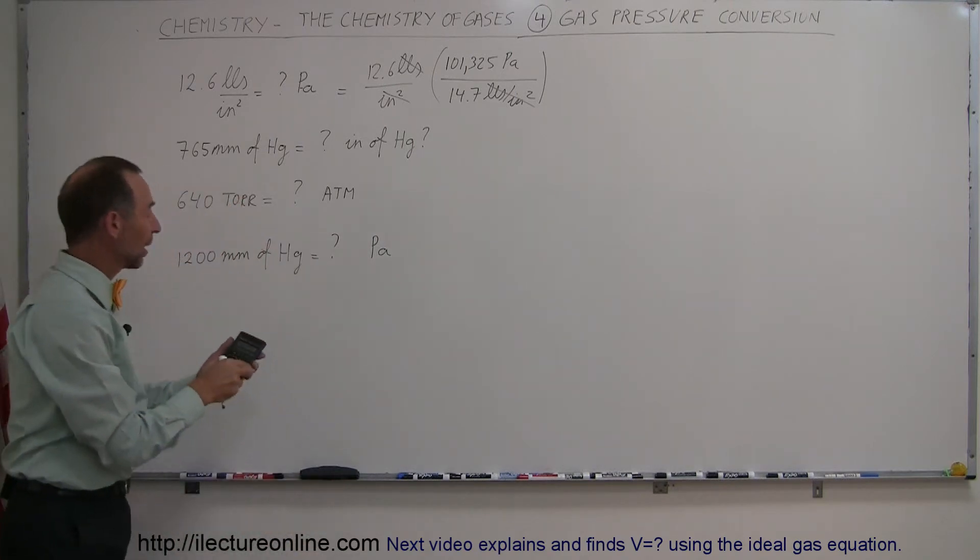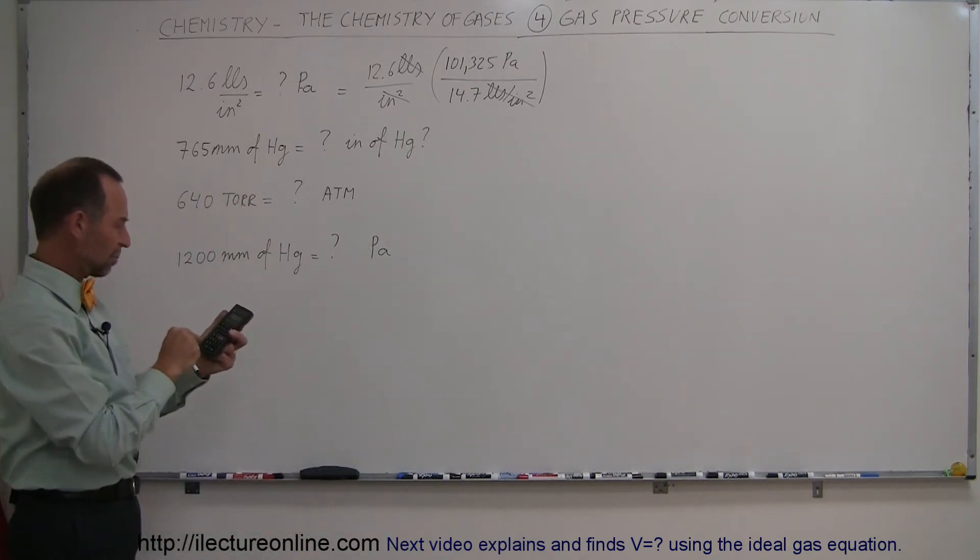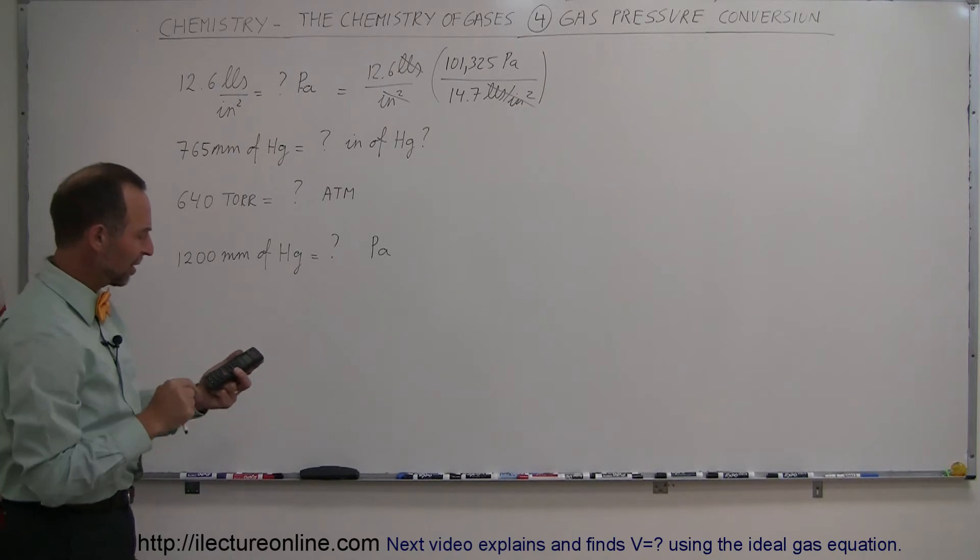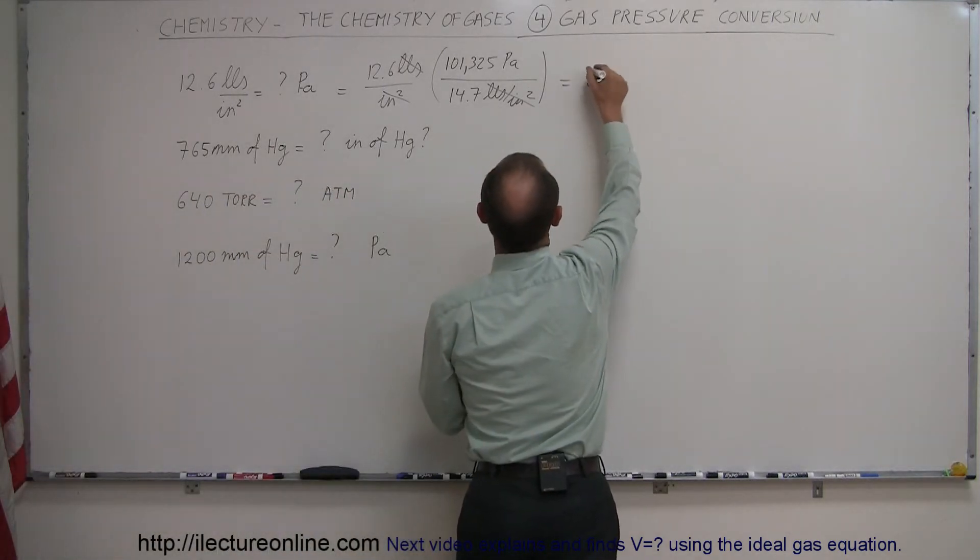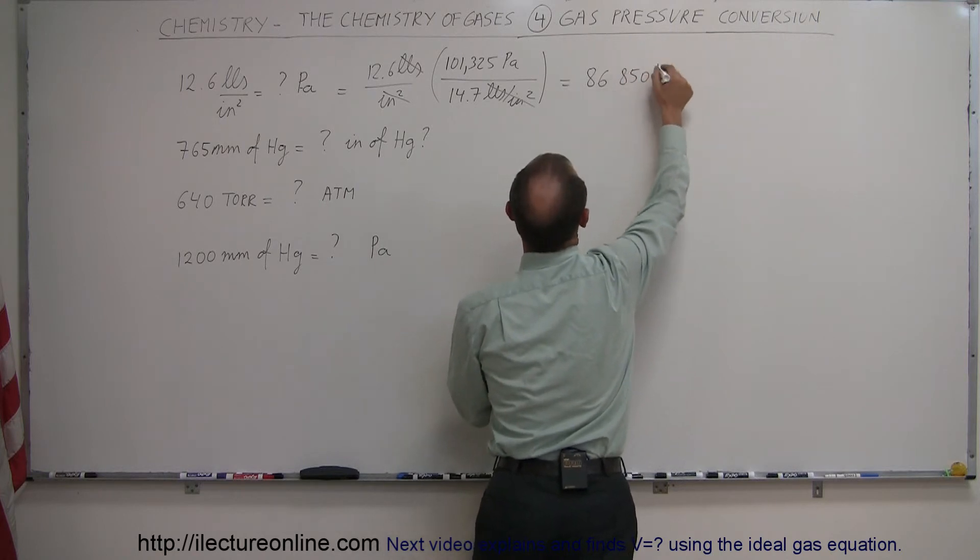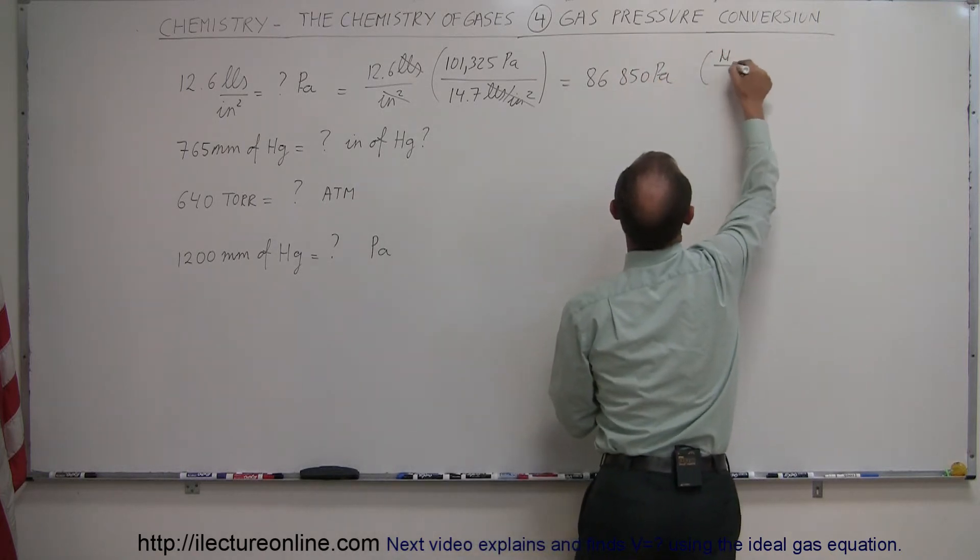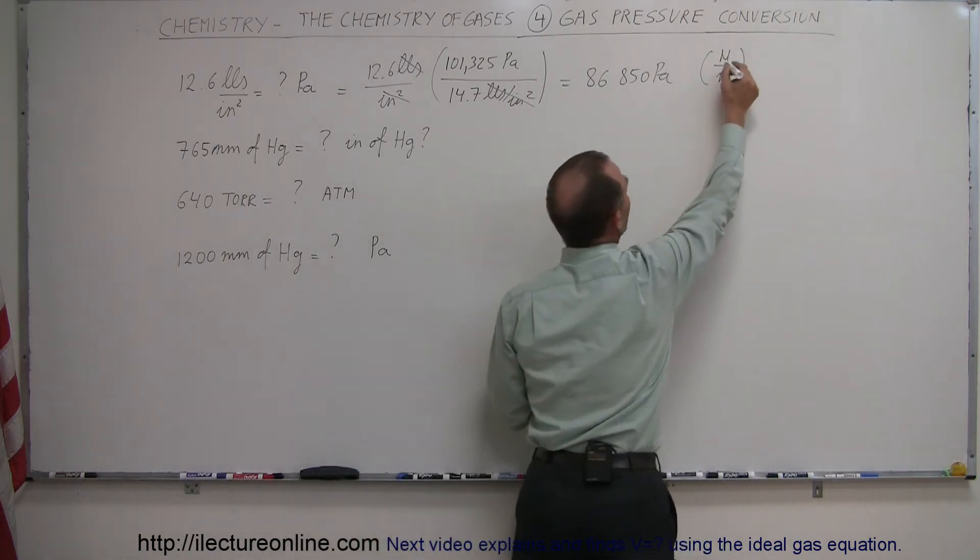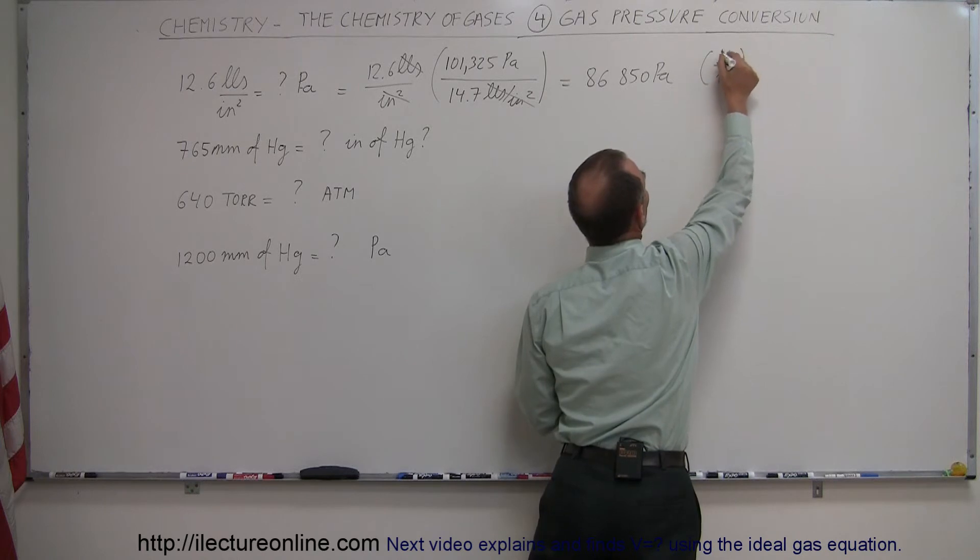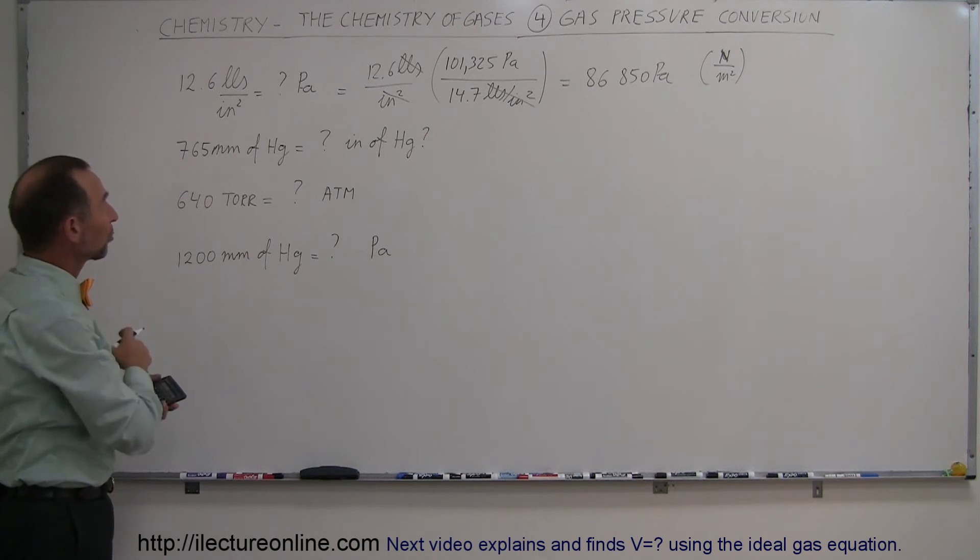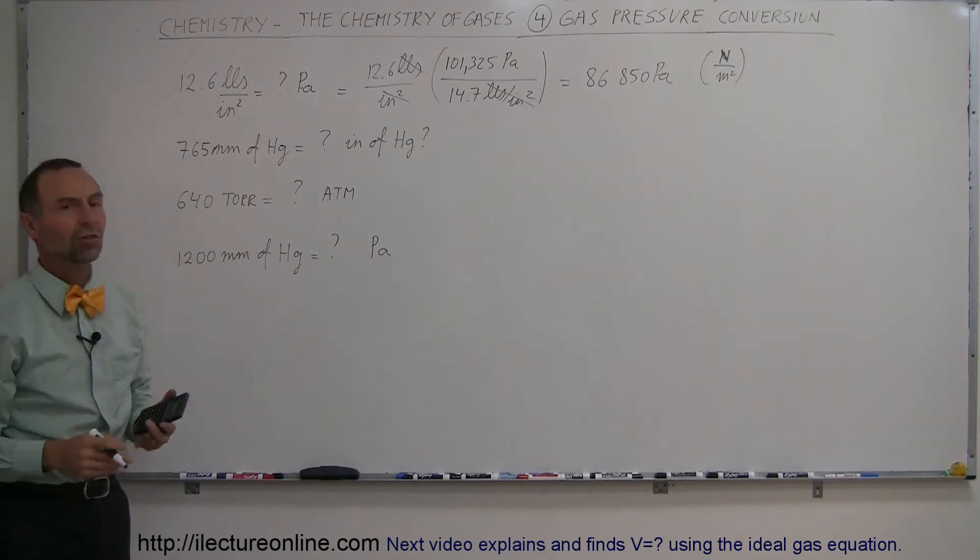So now with the calculator, we say 12.6 divided by 14.7, that gives us 0.857, multiply times 101,325, and we get 86,850 Pascals or Newtons, that's the same as Newtons per square meter. So that's the standard unit of pressure, this should be an N right there, and Newtons per square meter. All right, so that's how you convert from pounds per square inch to Pascals, which are the standard units.